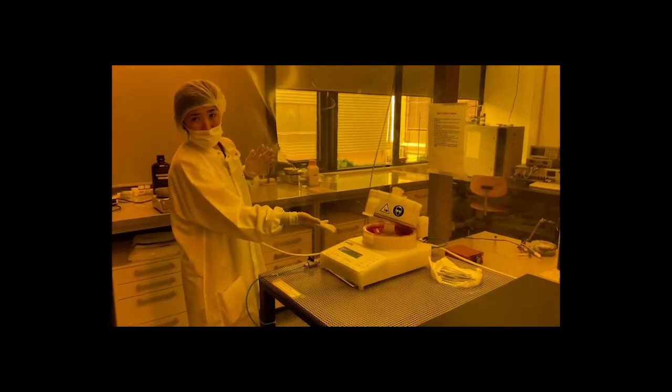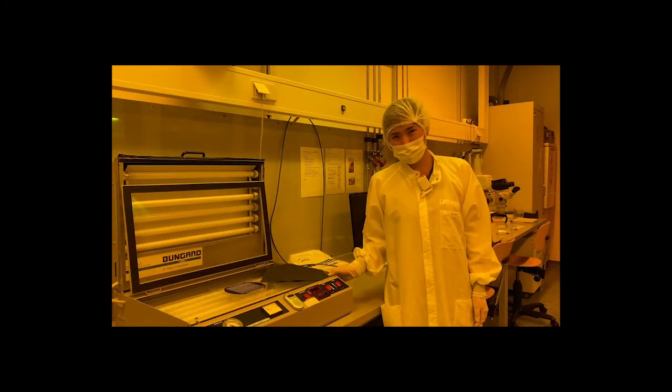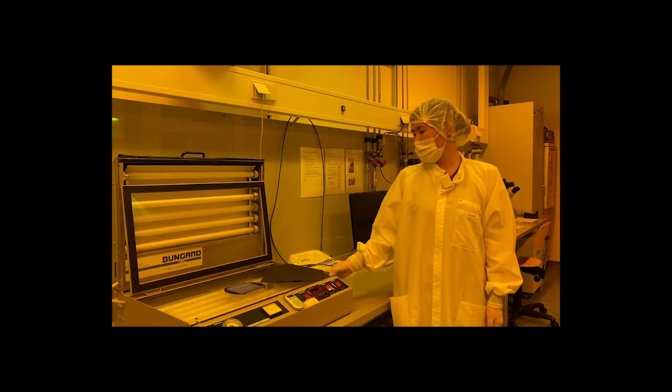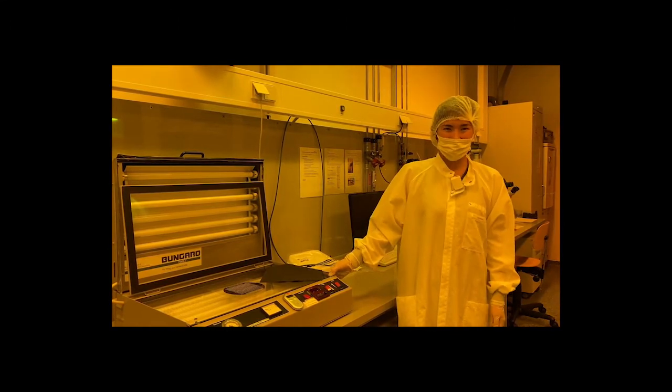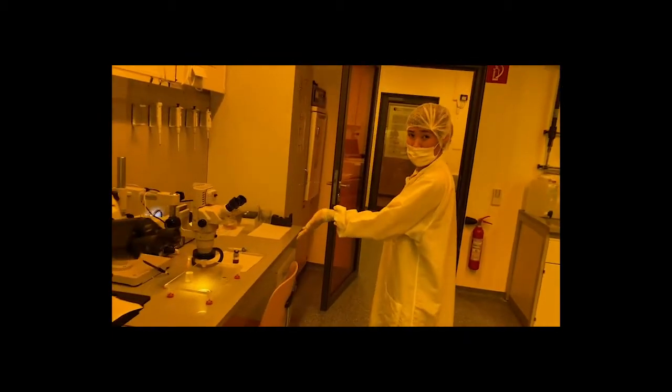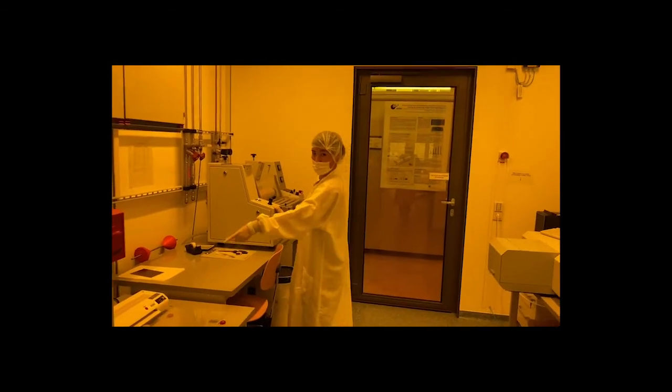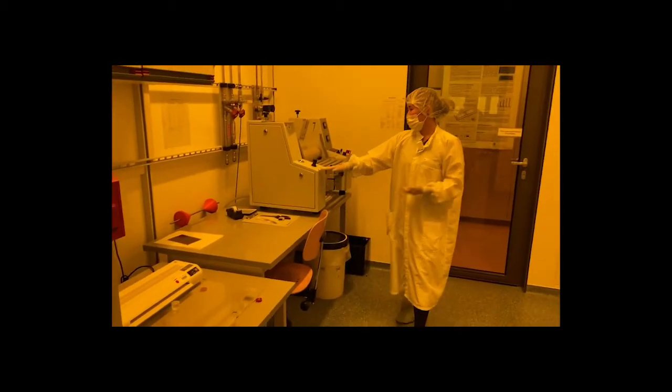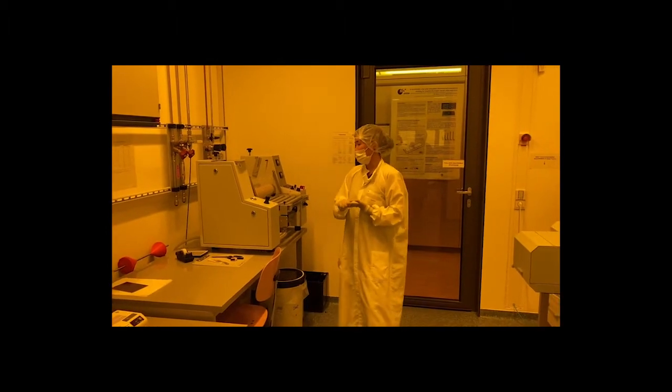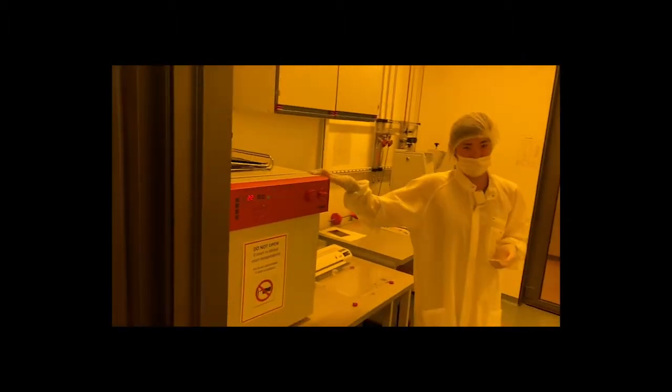Here we spin coat our photoresist. Next we've got the UV exposure unit which we predominantly use to expose all of our DFR layers before developing them. This is what we use for the Teflon dispensation to build up the stopping barriers. This is our big laminator which we use to laminate all of the DFR layers onto the prepared wafers prior to baking them for three hours in our oven.